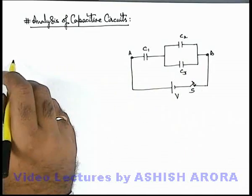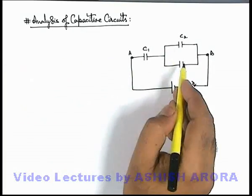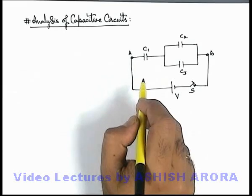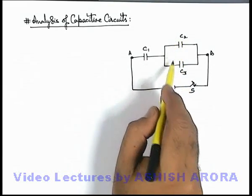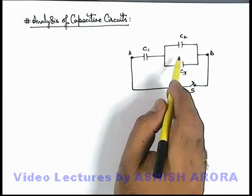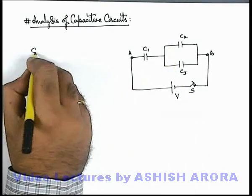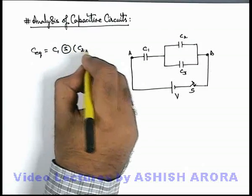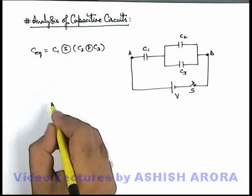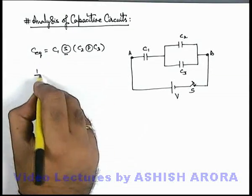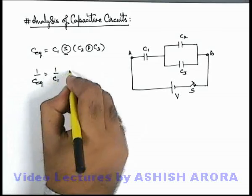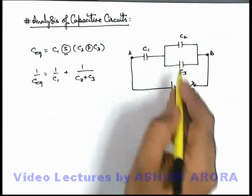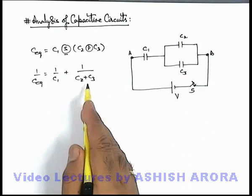If we talk about the equivalent capacitance, we can write that equivalent capacitance is C2 and C3 in parallel, and their group is connected in series with capacitor C1. So the combination of C2 and C3 in parallel will be C2 plus C3.